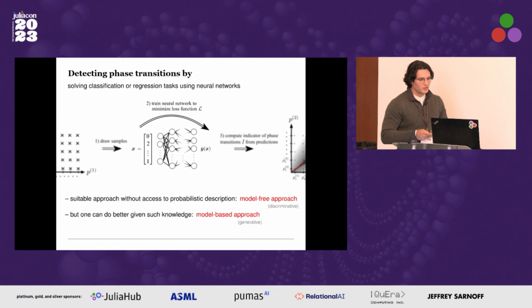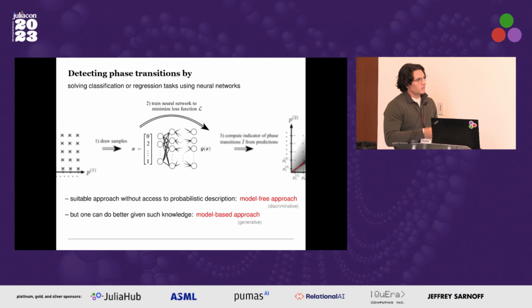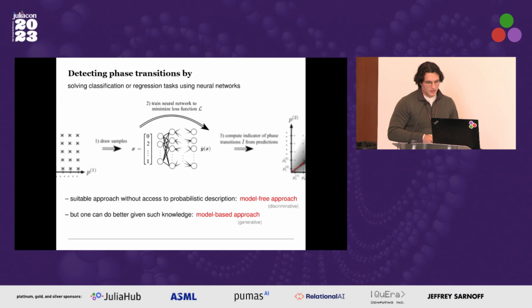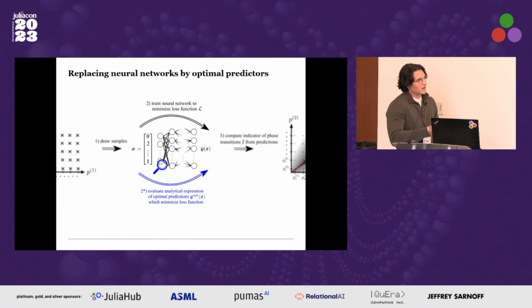Many popular machine learning methods for detecting phase transitions are based on explicitly solving classification or regression tasks by training neural networks. This approach is suitable when we don't have access to the probability distributions underlying our measurements. But it turns out that often times we do have such access, and we can do better by exploiting this knowledge. What we do is replace the neural network with analytical expressions for the optimal predictions ŷ_opt, which minimize the loss function — optimal in the sense that no other predictive model would perform better on the task specified by the loss function.